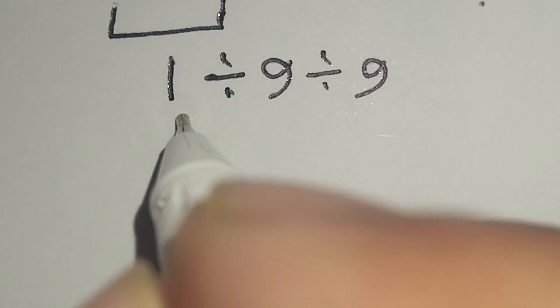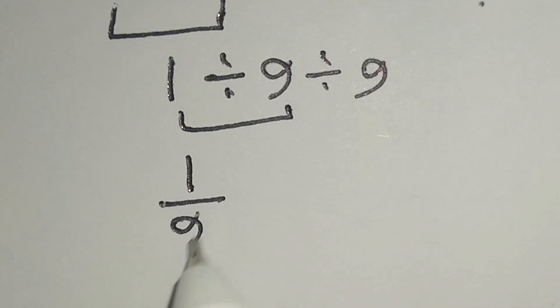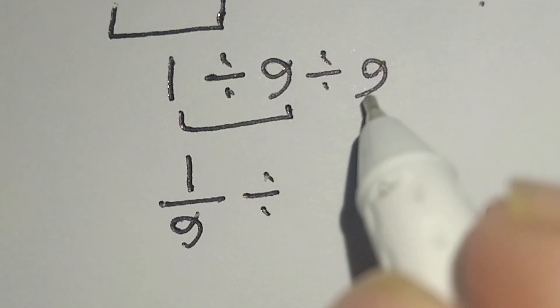We can write this 1 divided by 9 as 1 over 9, divided by this 9.